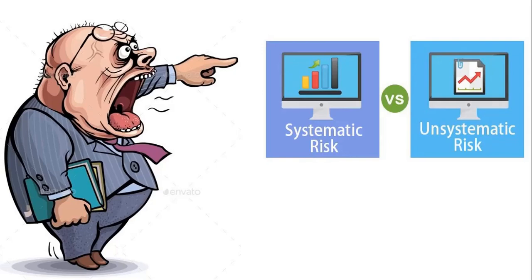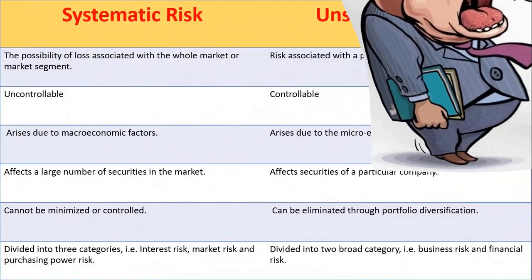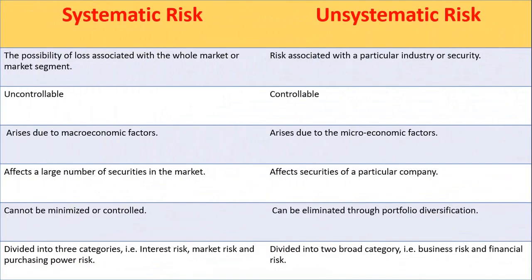Let's see the key differences between systematic risk and unsystematic risk. Systematic risk is the possibility of loss associated with the whole market or market segment. On the other hand, unsystematic risk is the risk associated with a particular industry or security.